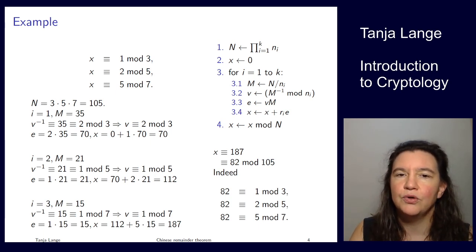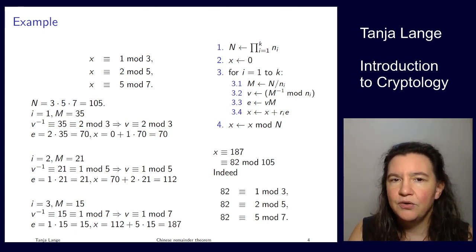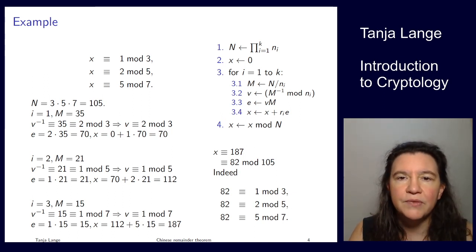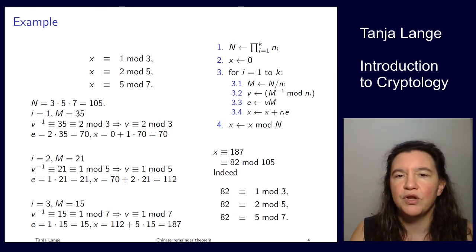So we have now seen an example of how you use the Chinese Remainder Theorem, and then you can just simply program this. We're doing this here for integers, but all the same works also if you're working with polynomials. Then the only thing you have to watch out is whether you want your solution to be monic or not. Thanks.